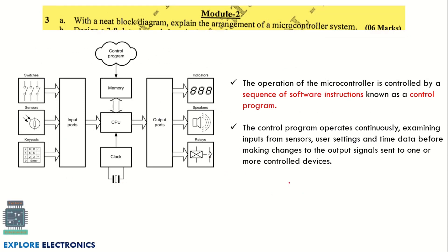The second module question asks you to explain the arrangement of a microcontroller system with a neat block diagram. The block diagram includes the CPU with input/output ports, memory, clock, inputs, and output actuators. A brief explanation of each component is required. This question carries six marks — three to four marks for the diagram and the remaining marks for the explanation.